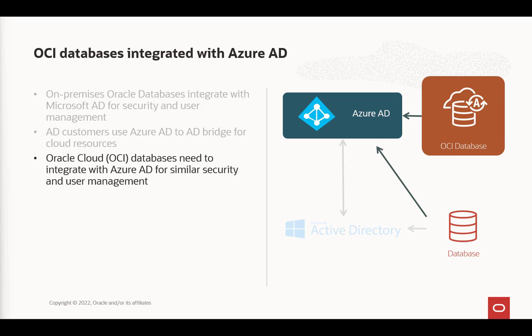OCI databases, or Oracle Cloud Database, also need to connect to Azure AD, just like the on-premises database connects with Active Directory. This also happens to work with any Oracle Database, but in general, we find customers prefer to use cloud databases with cloud identity providers and on-premises databases with Active Directory.